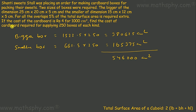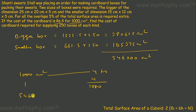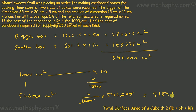The cost is Rs.4 for 1000 cm². So 1 cm² costs Rs. 4/1000. Therefore, 546,000 cm² will cost (4/1000) × 546,000 = Rs. 2184 in total. That is the cost of cardboard required for 250 boxes of each kind at the rate of Rs.4 for 1000 cm².